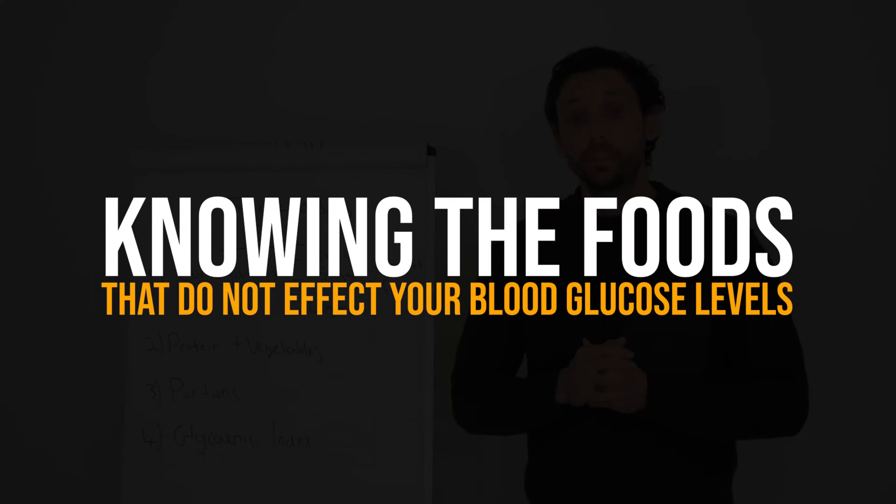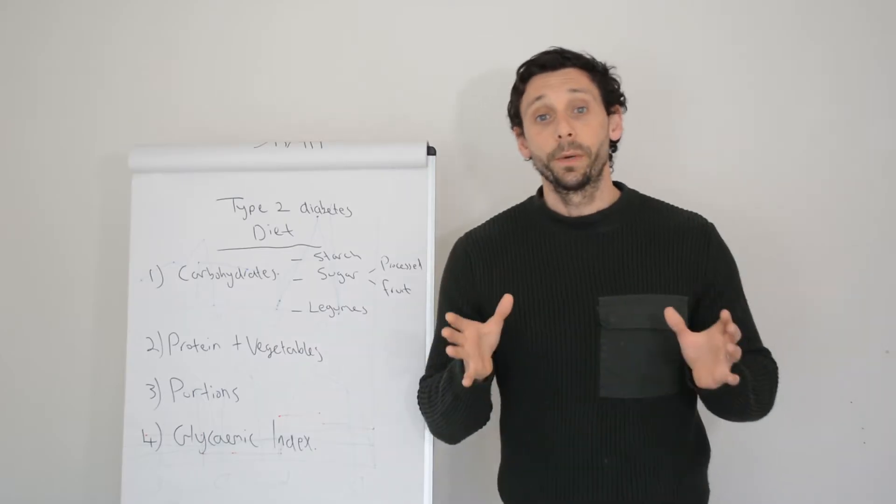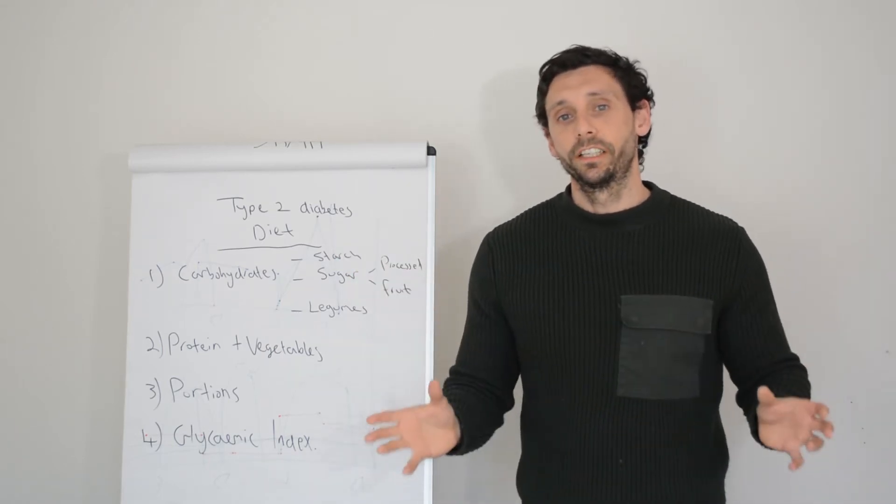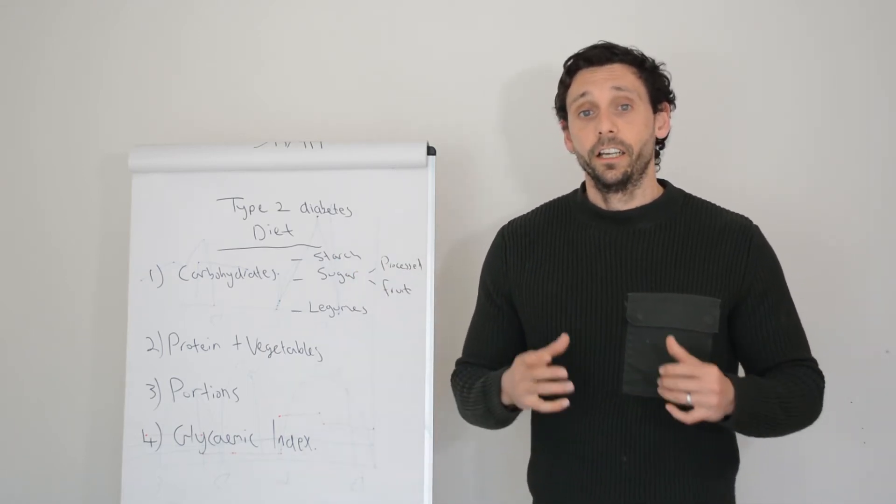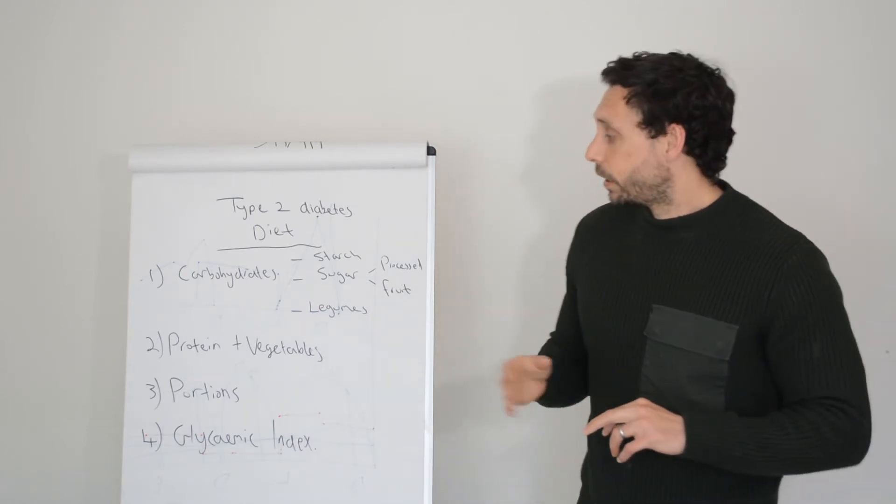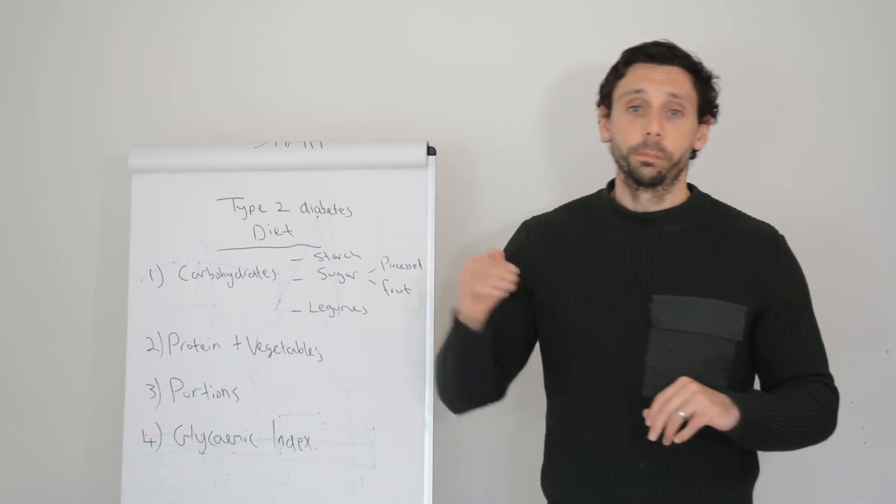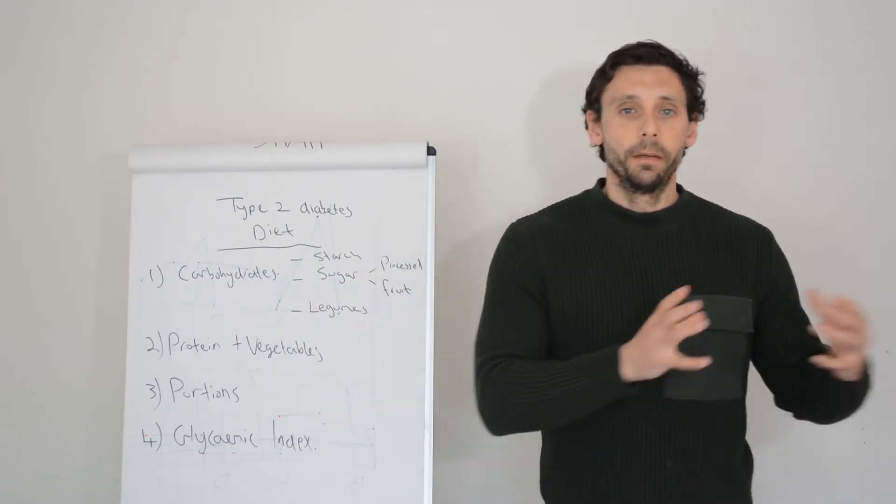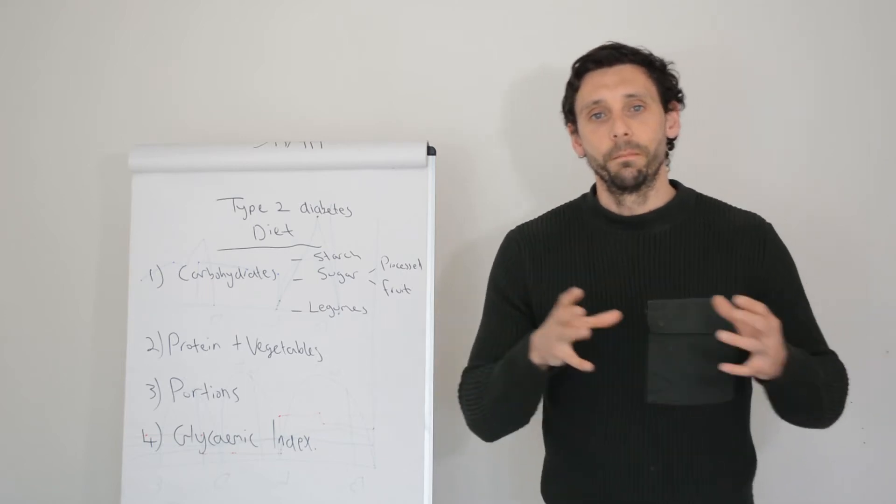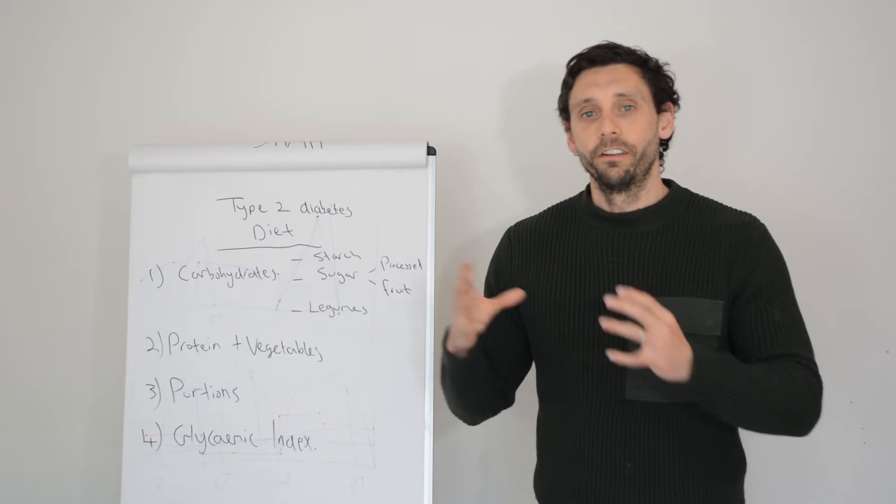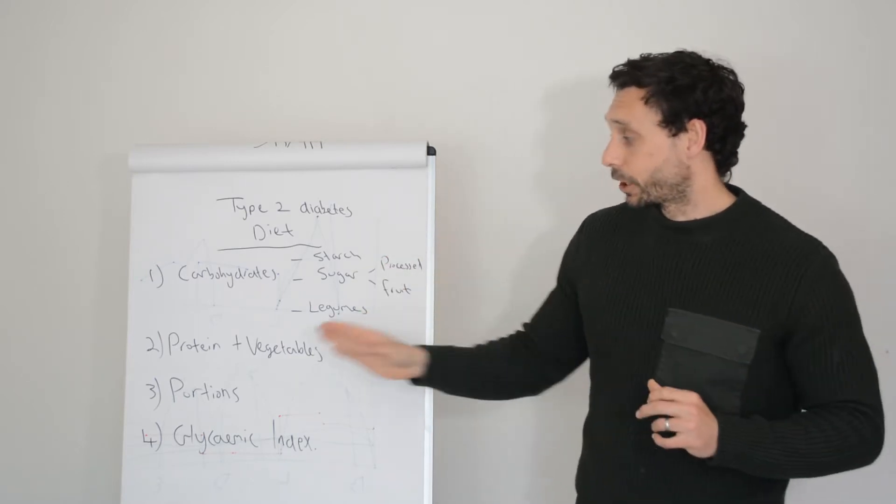Number two: knowing the foods that do not affect your blood glucose levels. Now we know where the carbohydrates are in the diet, so the foods that affect your blood glucose levels. But there are lots of different foods in our diet that go beyond carbohydrates. We have protein and fats, for example. Knowing the foods that do not affect your blood glucose levels is very important.